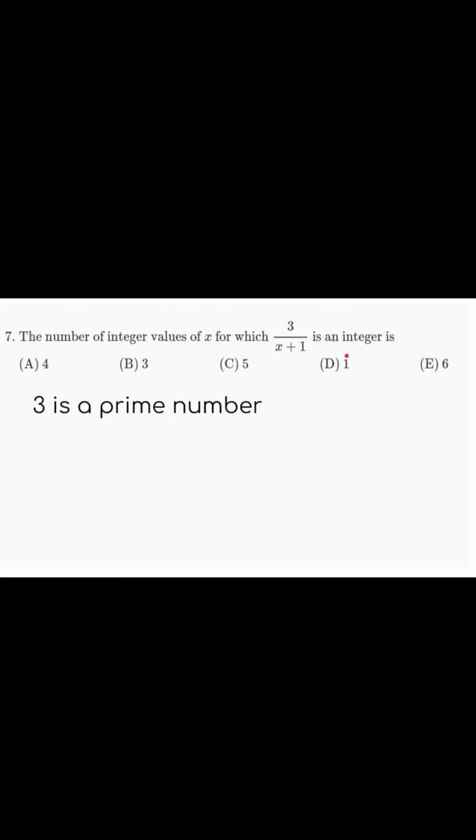3 is a prime number, meaning its only possible divisors are 1 and itself, which is 3. Therefore, the denominator has to be 1 or 3.